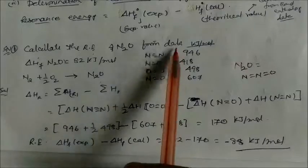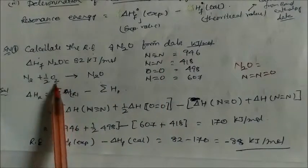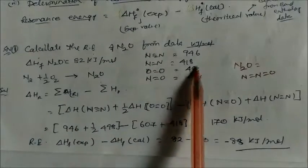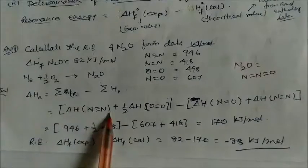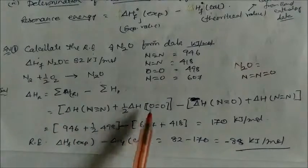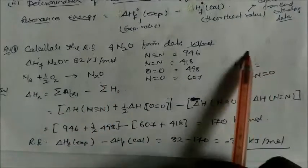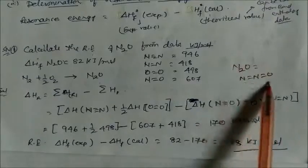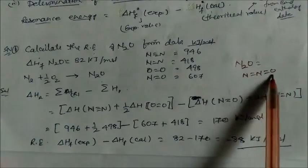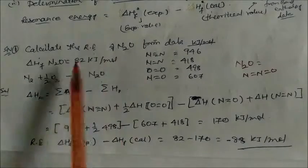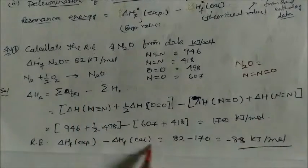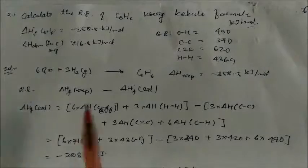Example: calculate resonance energy of N₂O. The reaction is N₂ + ½O₂ → N₂O. Theoretical ΔH = bond enthalpies of reactants minus bond enthalpies of products. The Lewis structure of N₂O shows one N–N bond and one N–O bond. Substituting enthalpy values gives the theoretical heat of formation. Resonance energy = experimental value − theoretical value = −82 − (−170) = calculated result in kJ/mol.